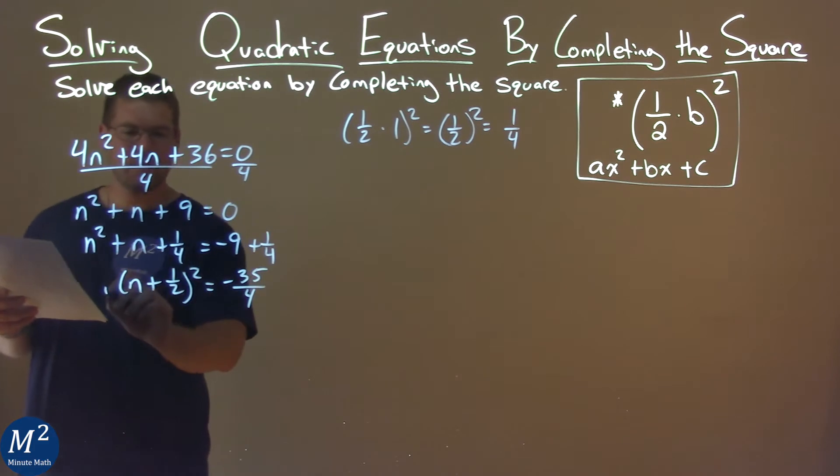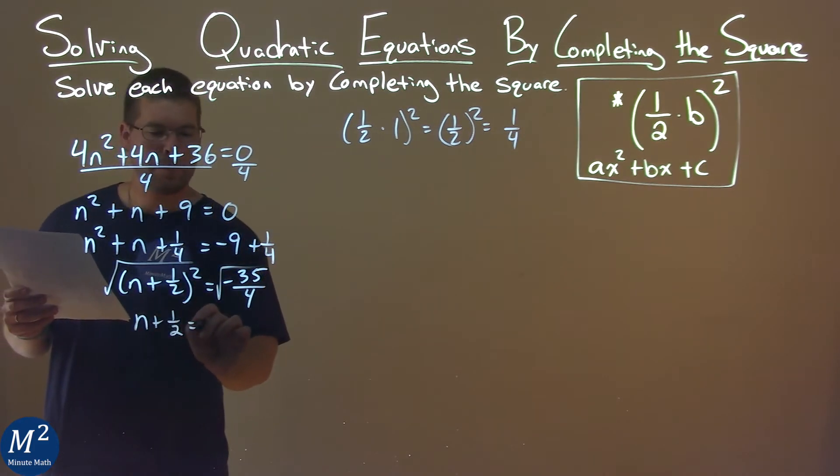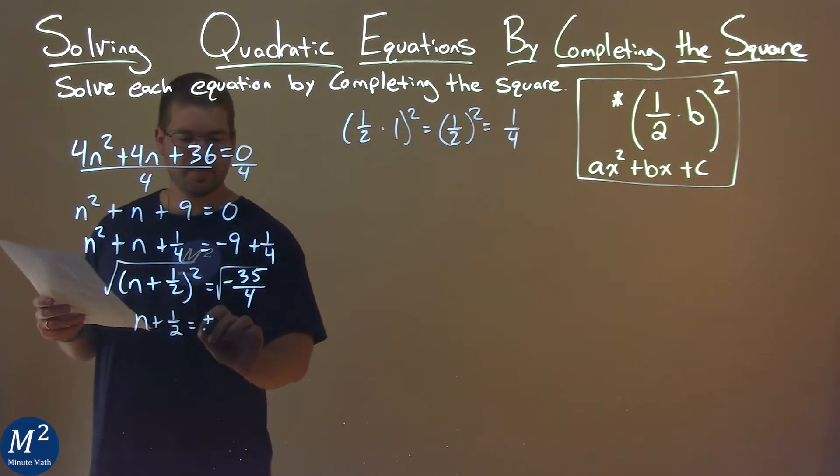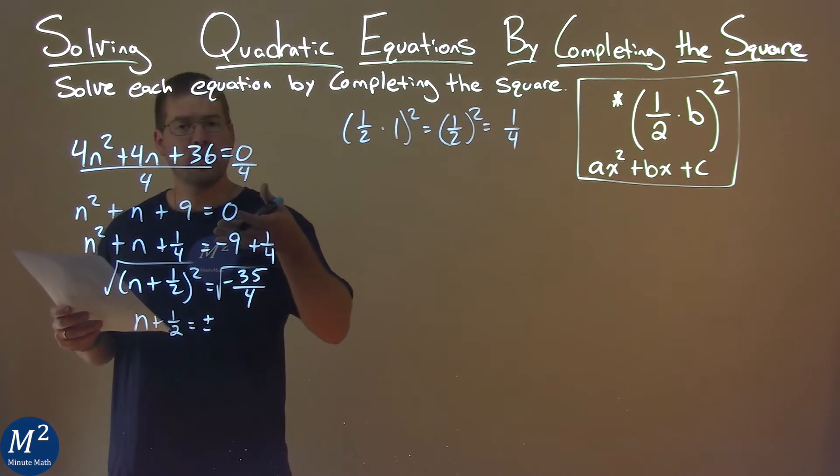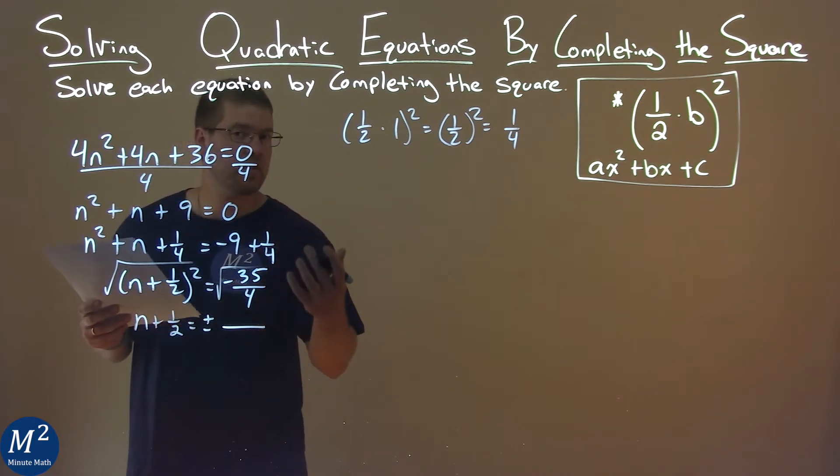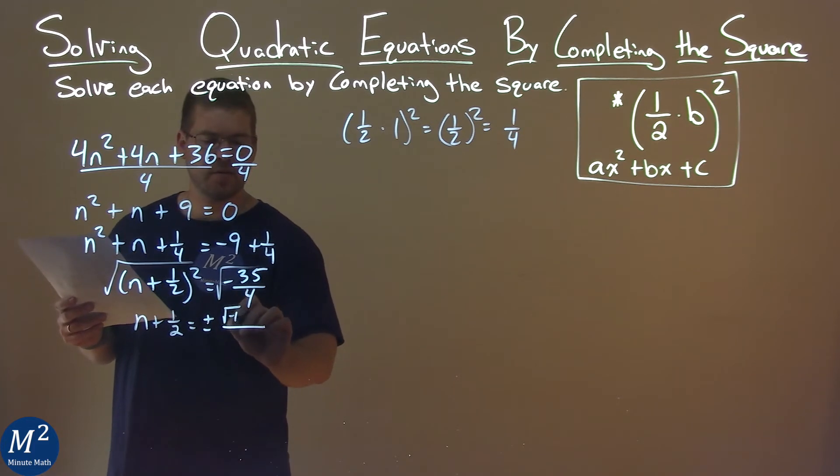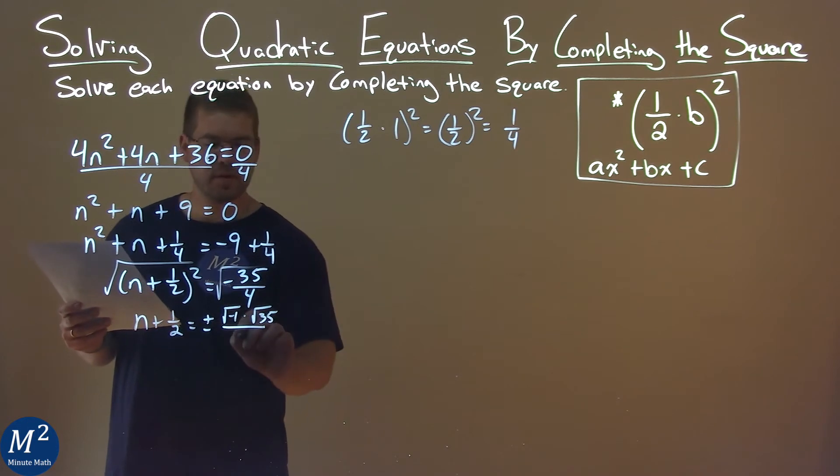We take the square root of both sides, and we have n plus one half here as equal to, now it's plus or minus here. And square roots of fractions, we can do the numerator and denominator individually. The numerator, square root of negative 35, is the same thing as the square root of negative 1 times the square root of 35. The denominator, square root of 4, is 2.